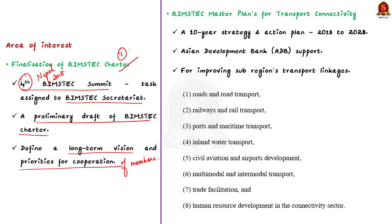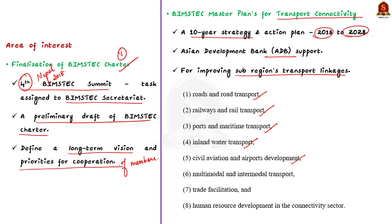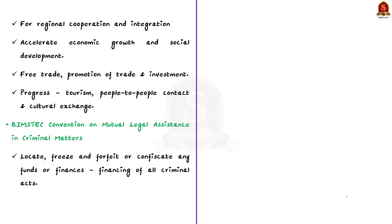The second area of interest is the BIMSTEC Master Plan for Transport Connectivity. It is a comprehensive 10-year strategy and action plan from 2018 to 2028, supported by the Asian Development Bank. It is for improving the sub-region's transport linkages covering roads and road transport, railways and rail transport, ports and maritime transport, inland water transport, civil aviation and airports development, multi-modal and intermodal transport, trade facilitation, and human resource development in the connectivity sector.